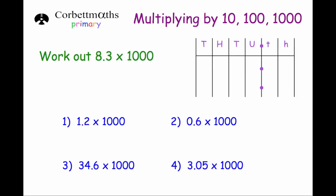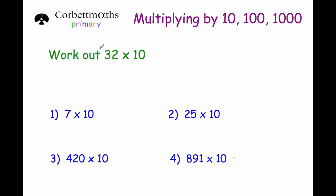You'll notice there's a pattern for each of these. So first of all, let's start off by multiplying 32 by 10. Watch the video on multiplication on cobermilesprimary.com if you need to recap the column method. So 32 times by 10 — the 10 has no units, so we just multiply by the 1. We put the 0 down, 1 times 2 is 2, and 1 times 3 is 3. So 32 multiplied by 10 gives the answer 320.